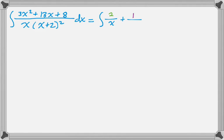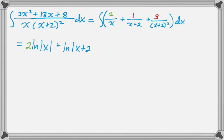And so finally, go back and actually do the problem I was supposed to do. So I have this. And none of those integrals are particularly hard. So I'll get 2 natural log of the absolute value of x plus natural log of the absolute value of x plus 2. And then minus 3, the quantity x plus 2 to the negative first. And then plus c.